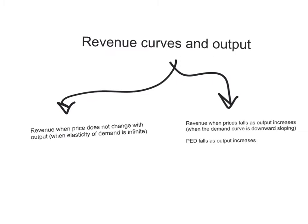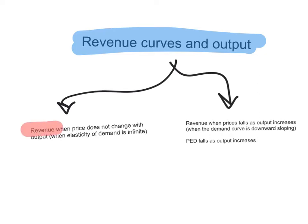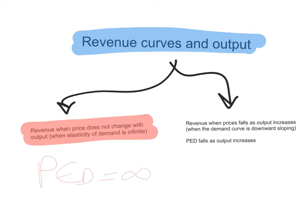Another learning outcome you are required to demonstrate is to be able to draw these revenue curves and their relationship with output. That will depend on the relationship between price and quantity. We will have a look at two different cases: how to draw the revenue curves when price does not change with quantity — meaning price elasticity of demand equals infinity — and how to draw revenue when price falls as output increases, on a regular downward sloping demand curve, where price elasticity falls as output increases.